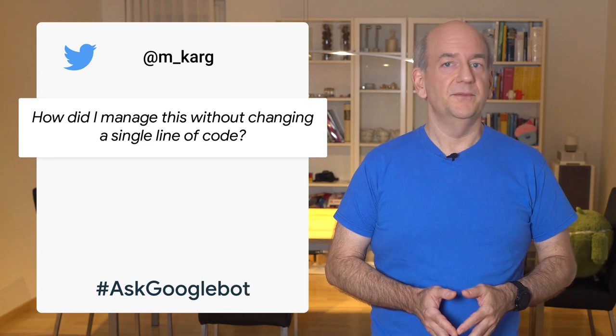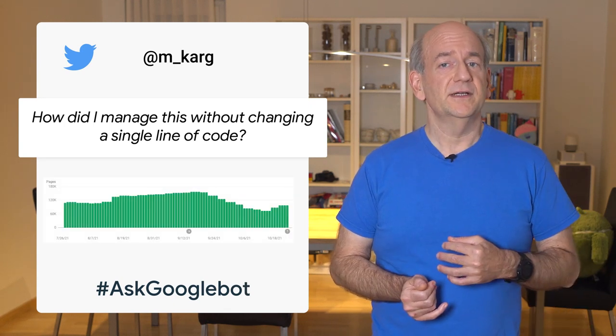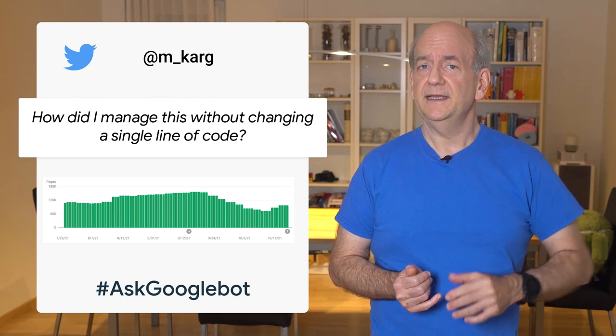Today, we have a question from Michael on Twitter. Michael asks why the graphs in Search Console sometimes just go up and down on their own.